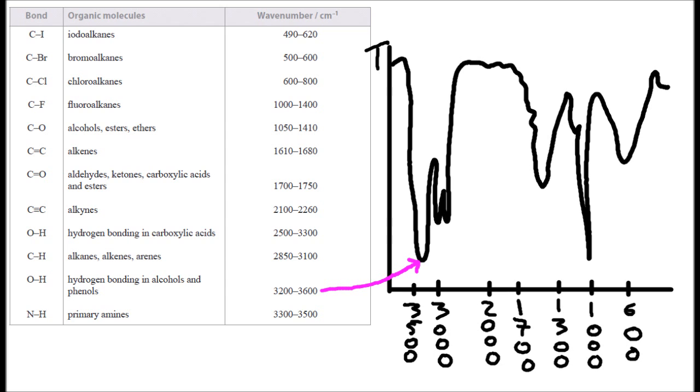So to me, that looks like that could be hydrogen bonding in alcohols and phenols, that blobby there. The other one coming down, alkanes, alkenes, arenes. Okay, I believe you.